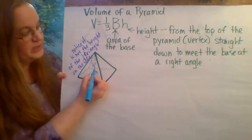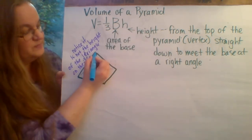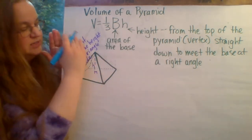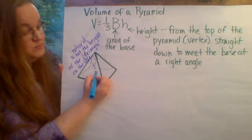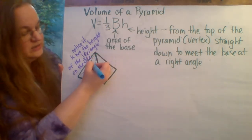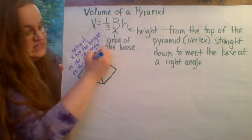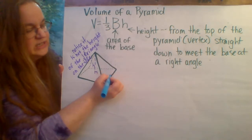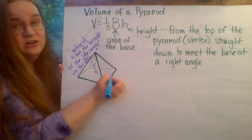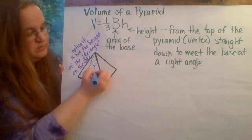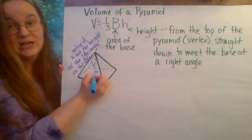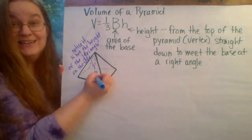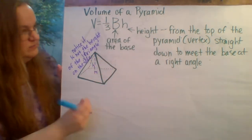One of the things we want to point out is that the height is from the very center — the vertex, where the faces come together — all the way straight down to the base. It's not along the face of the pyramid; it's internal, and that's one of the common mistakes people make. We call that the slant height — that's not what we're talking about. The height for volume goes straight down at a perpendicular angle to the base; it's internal, not along the outside.